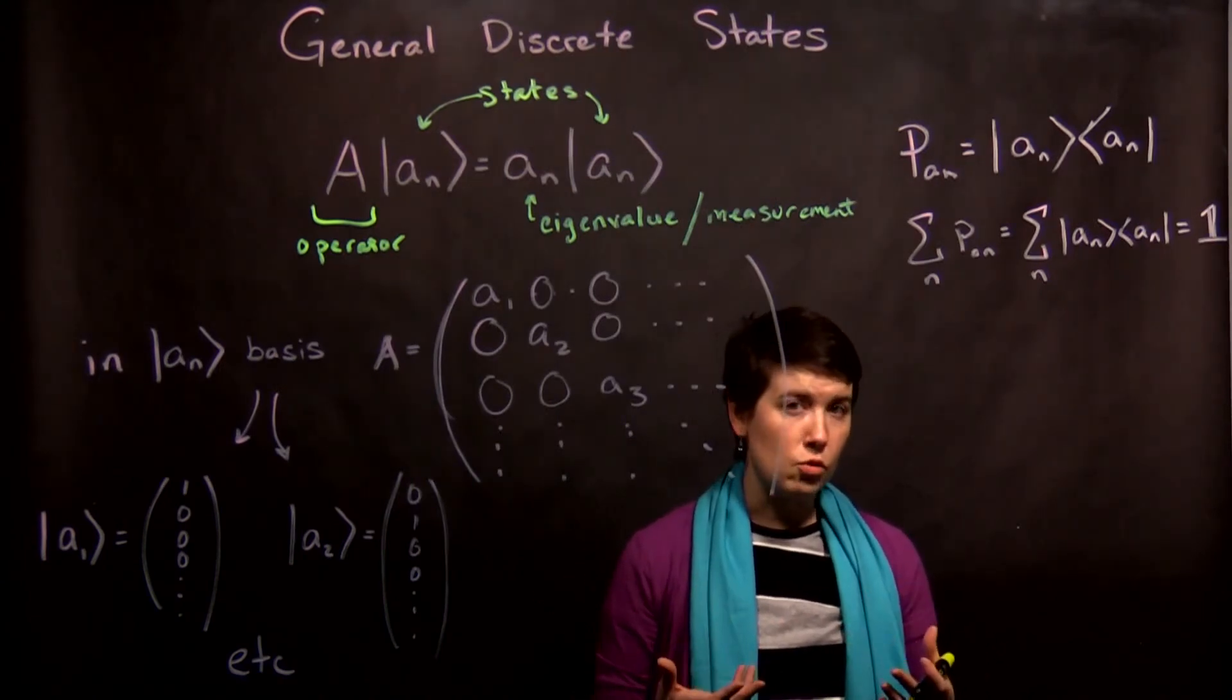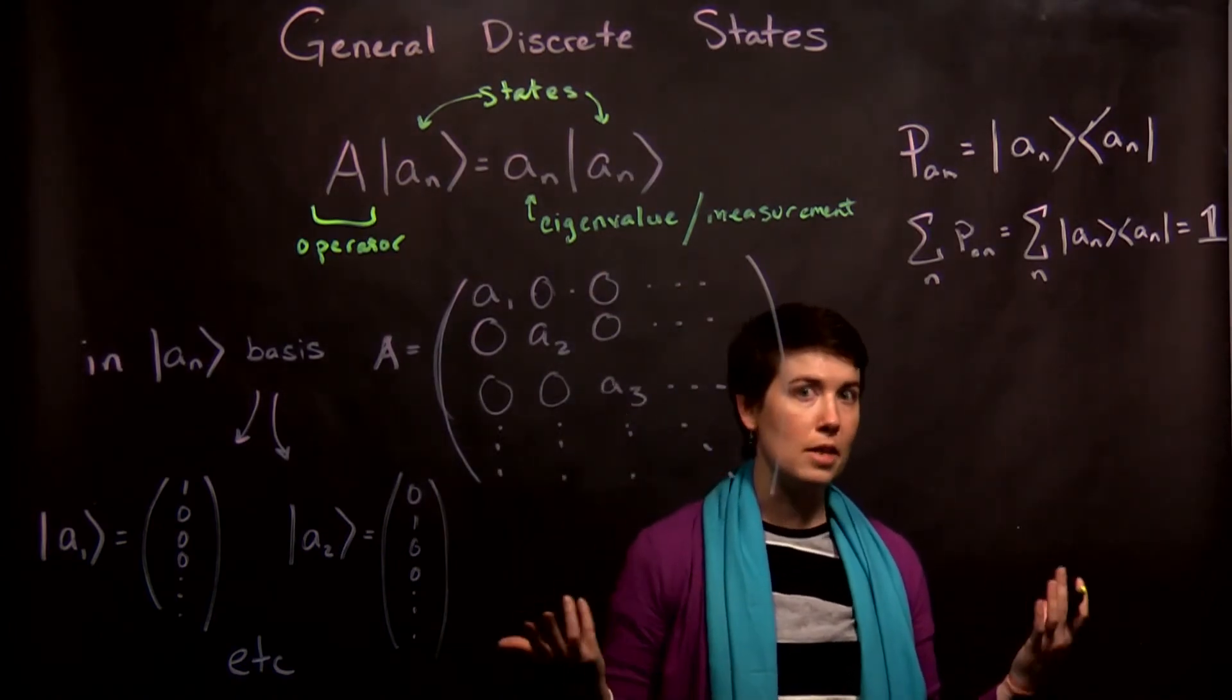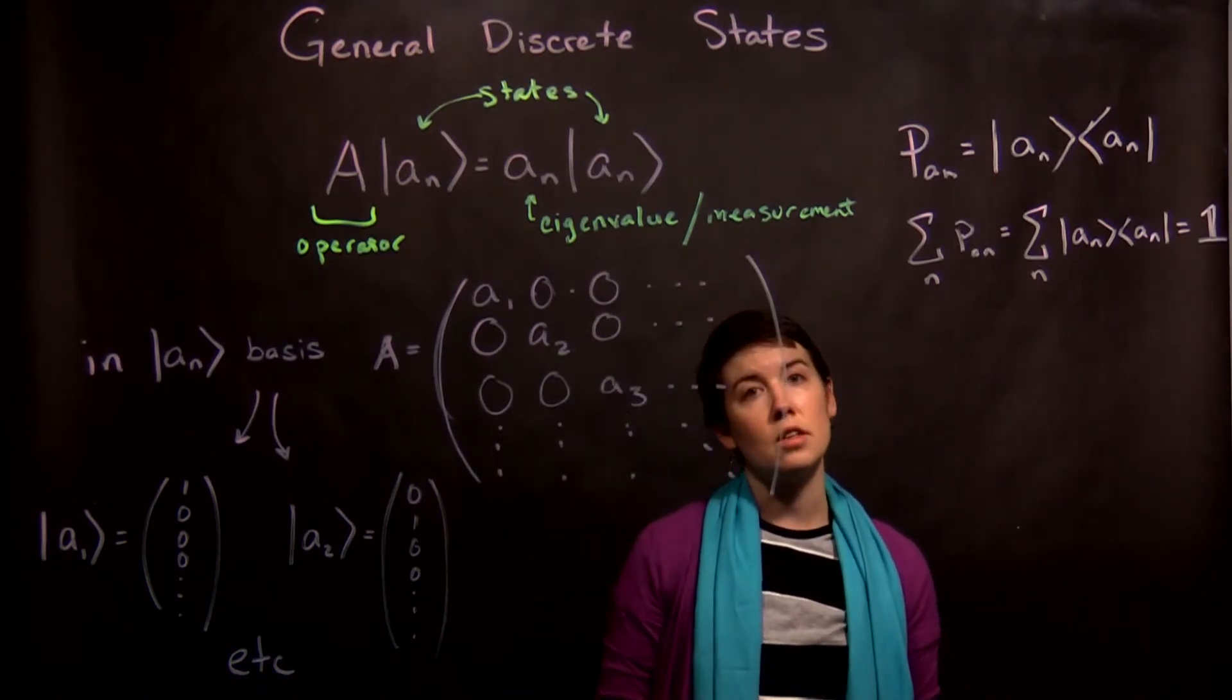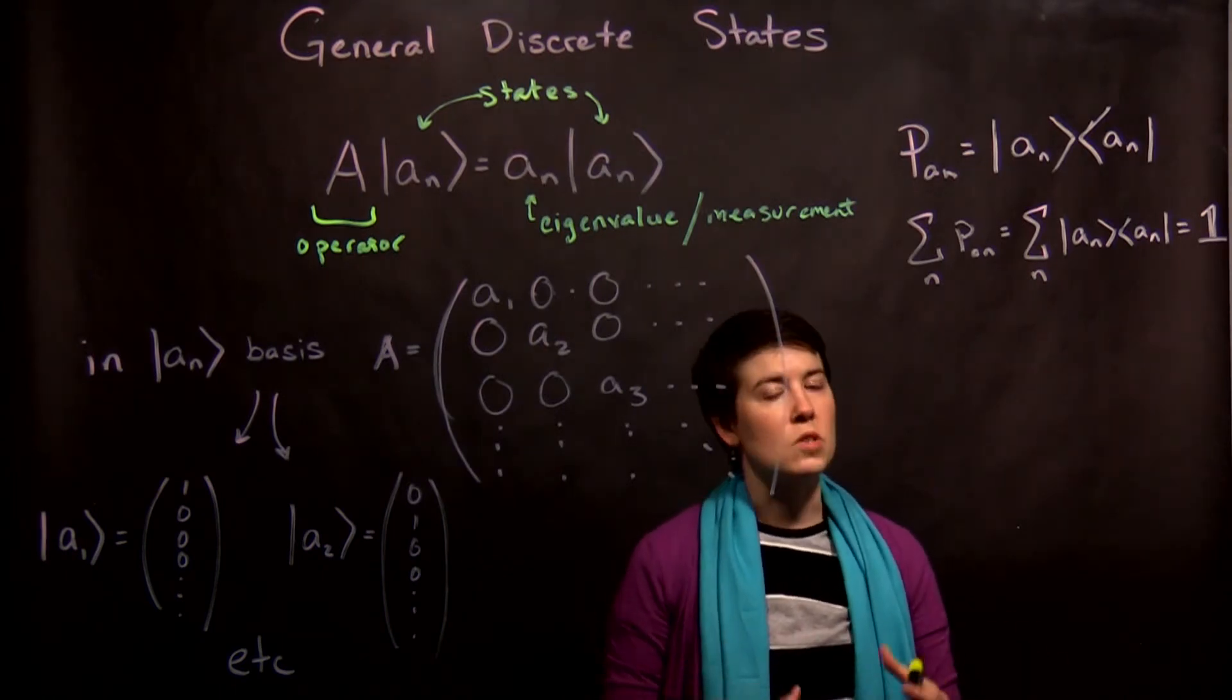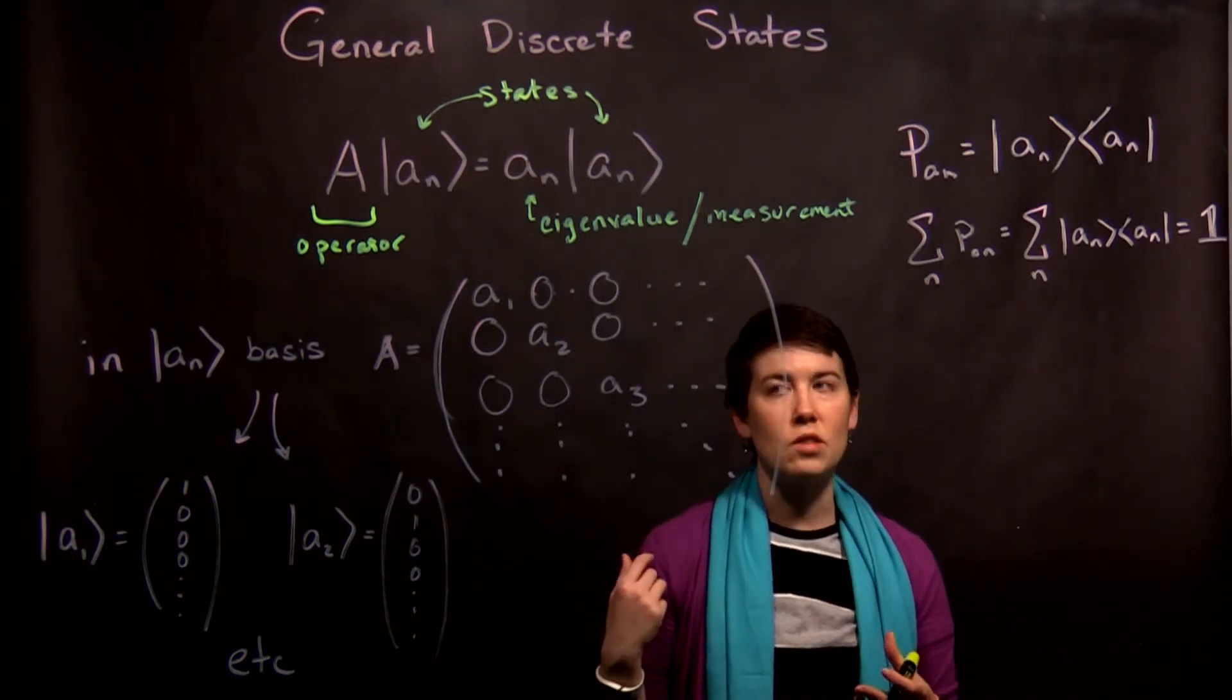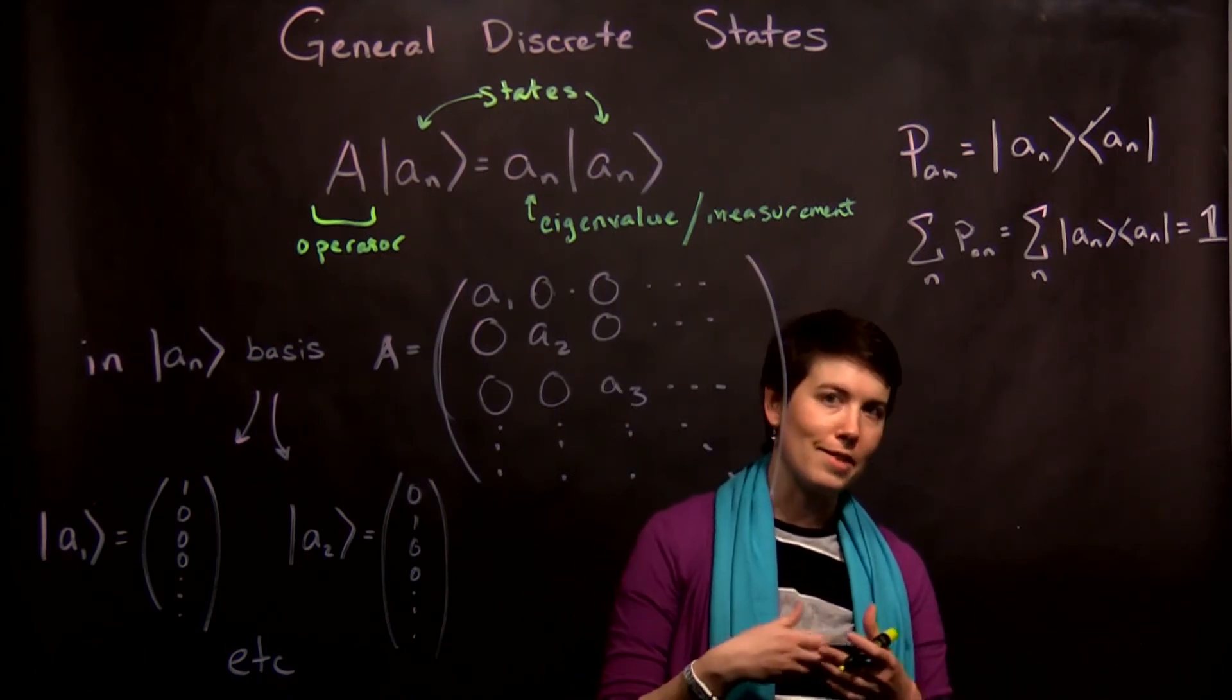So again, in the case of energy, we might start talking about infinitely big matrices if you have an infinite number of possible energy states. For spin, we've seen spin one-half has two possible states. Spin one has three possible states. There are other spin quantities that have more.